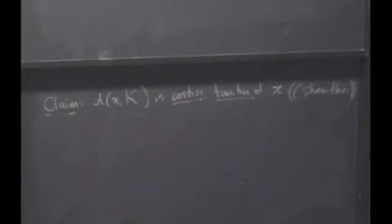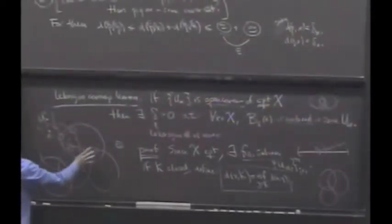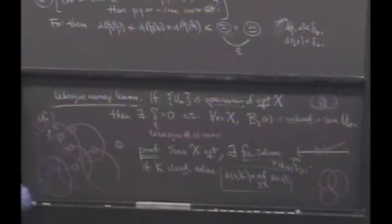Well, if these sets cover, then x is in at least one of the balls, yes? Or one of these covering sets, yes? And so the distance between x and its complement is going to be non-zero, yes?